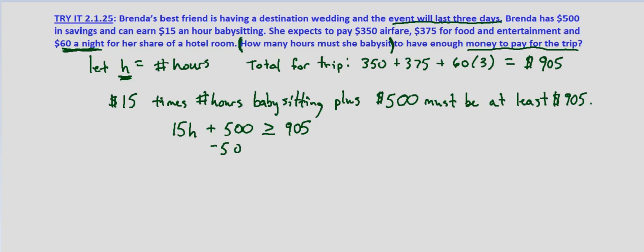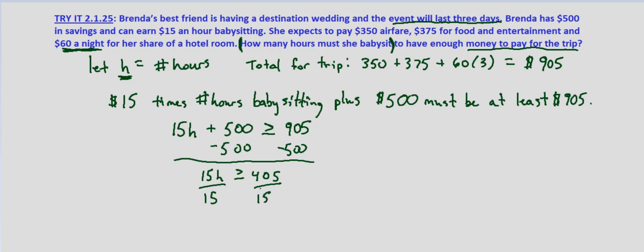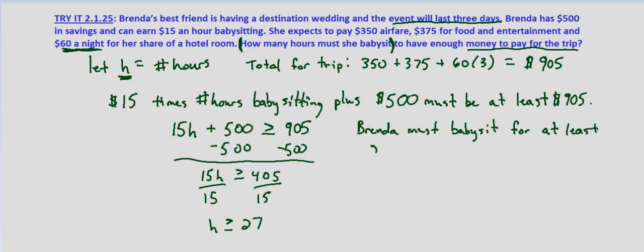So we subtract $500 from both sides, and we get that $15H must be greater than or equal to $405 — that's 905 minus 500. Now we divide both sides by 15, and we end up getting that H is greater than or equal to 27 hours. She must babysit for at least 27 hours.